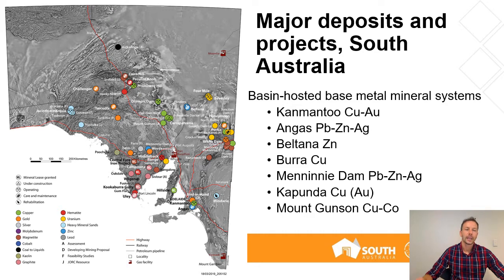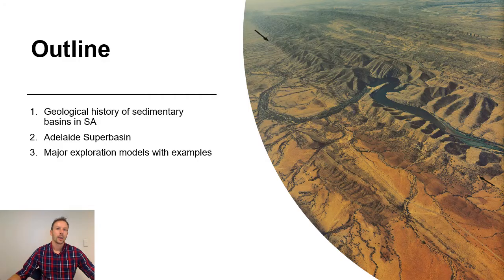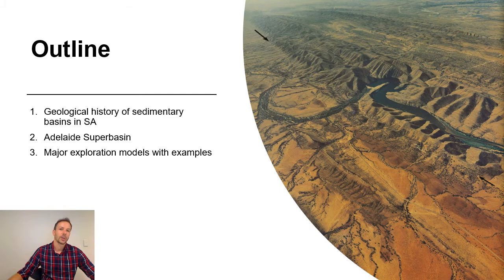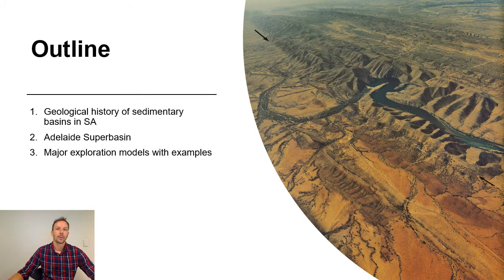Both of those are basin-hosted. There are many examples of smaller basin-hosted occurrences in South Australia, and plenty of potential which I'll talk about. The photo on the right is from the picturesque Northern Flinders, showing deformed Neoproterozoic sediments with the arrow pointing to where you have Cambrian sediments onlapping. These Cambrian sediments host a number of small MVT-style prospects and occurrences.